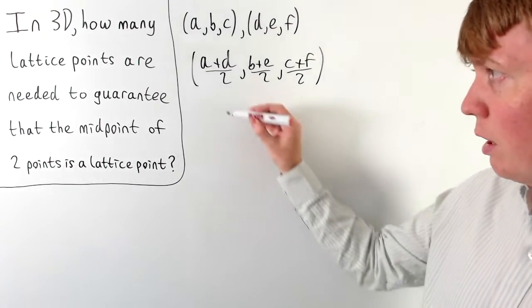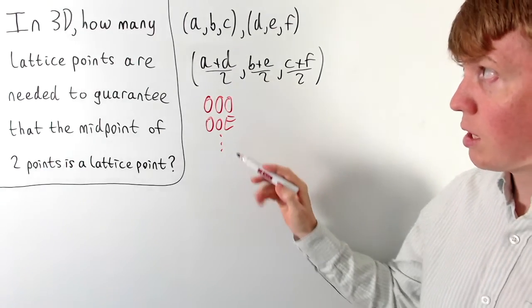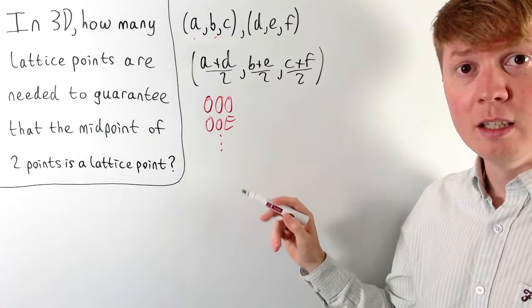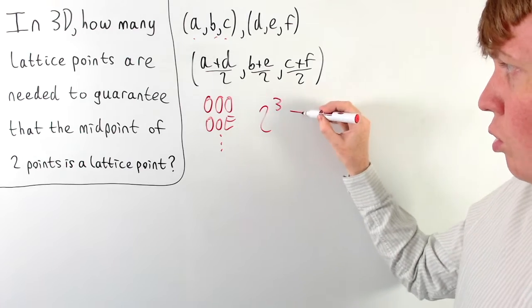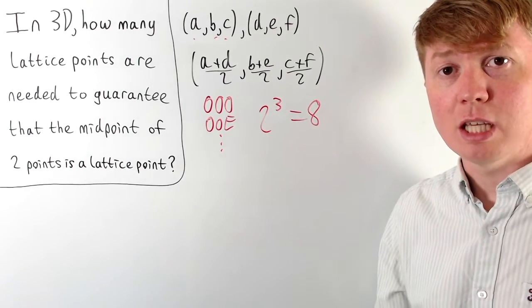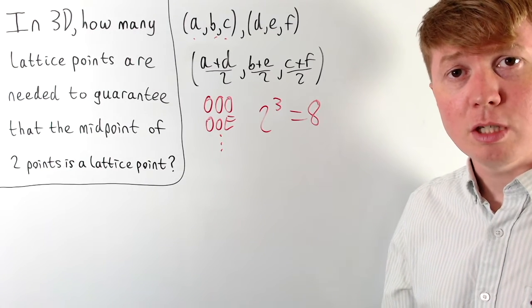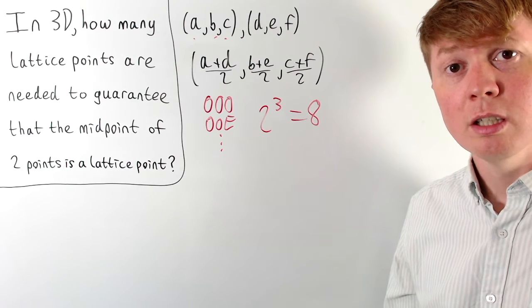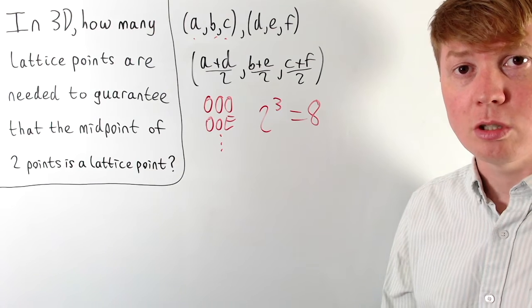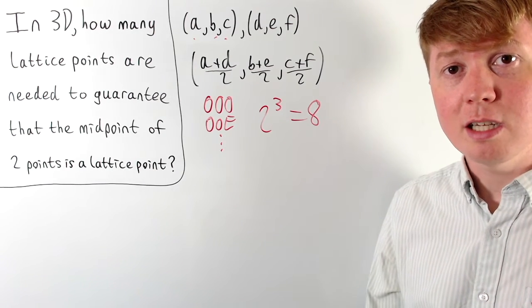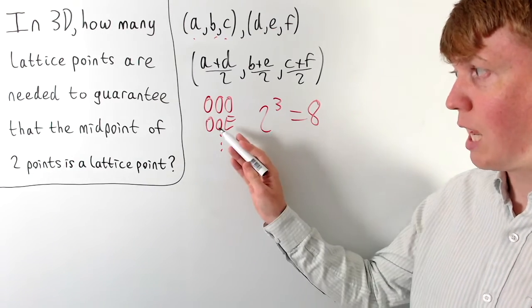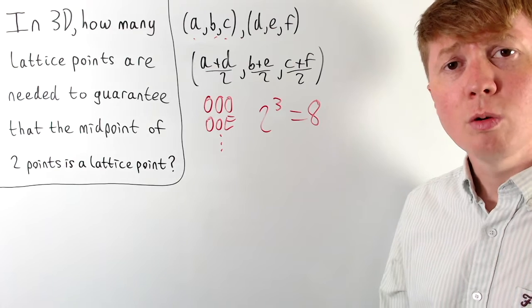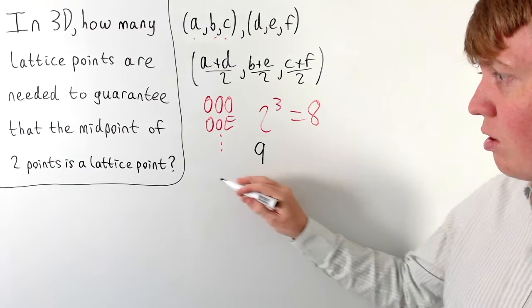In 3D we could list them all — odd/odd/odd, odd/odd/even, and so on — but a quicker way is to notice there are two possibilities for each of the three coordinates, so 2³ = 8 total combinations of parities. It is possible in three dimensions to have eight points in our set, all with different combinations of odd and even coordinate entries, so that the midpoint between any two isn't guaranteed to have all integer coordinates. But as soon as we add a ninth point, it guarantees at least two points share the exact same parity combination, which guarantees all coordinates of their midpoint are integers. So the answer in three dimensions is nine.